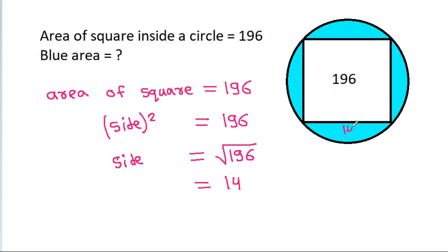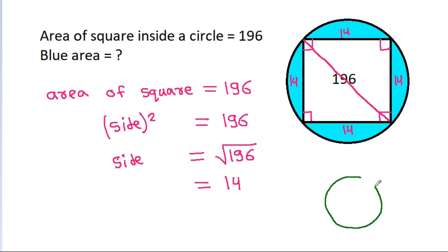So the side is 14. Now, if we join the diagonal of the square, then these angles will be 90 degrees. And in any circle, if this angle is 90 degrees, then the chord AB it will be a diameter.